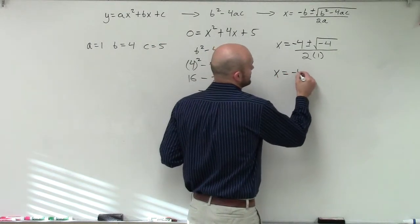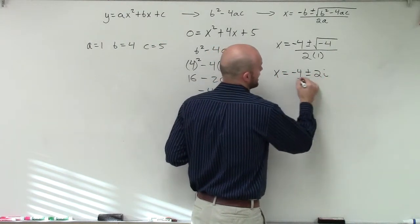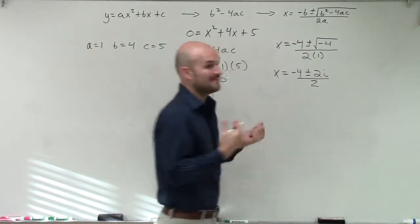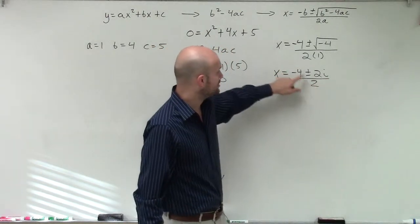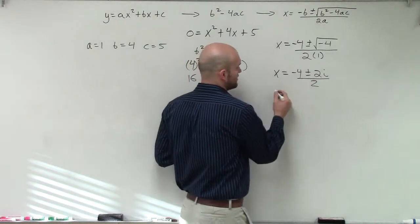So therefore, I'll have x equals negative 4 plus or minus 2i, divided by 2. Then you see that I can divide this 2 into both of my terms.